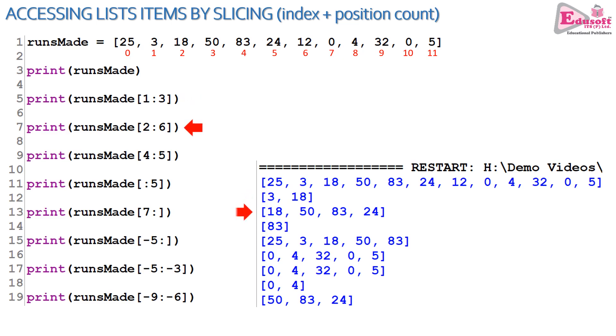Now you can understand line number 7: index 2, position from the beginning 6. Line number 9: index 4, position from the beginning 5. Both are same, that's why the output is 83.